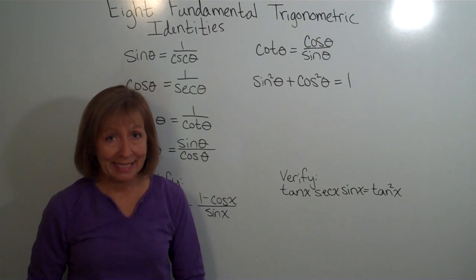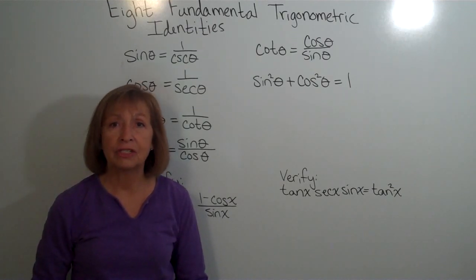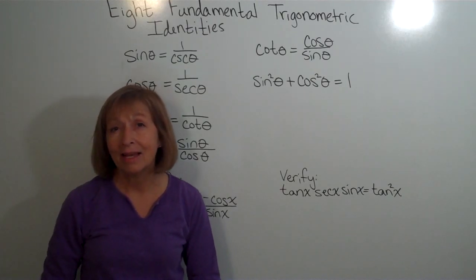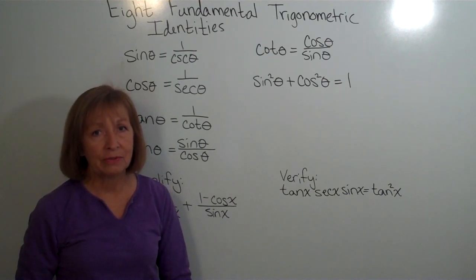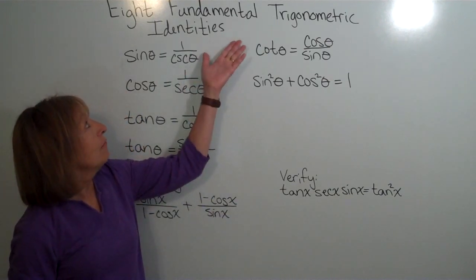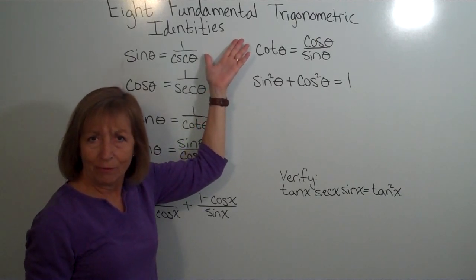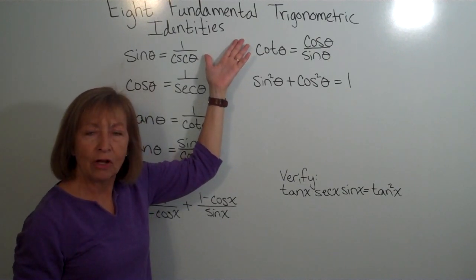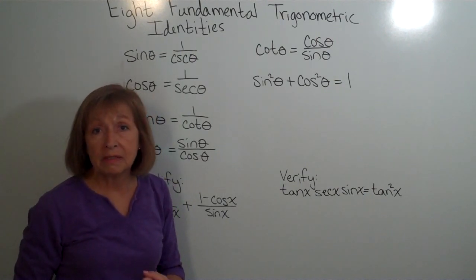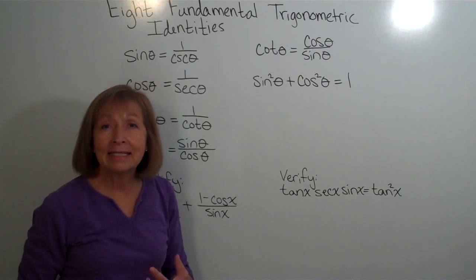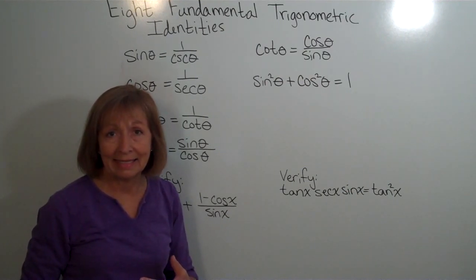We're going to start with the eight fundamental trig identities, do a couple examples here, and then in other videos we'll work different applications, continually practicing our trig identities and expanding our knowledge of other trig identities so that we have a strong foundation when we need to use these later on. These eight fundamental trig identities come in some subgroups: the first are the reciprocal trig identities, the second are the ratio trig identities, and the third are the Pythagorean identities.